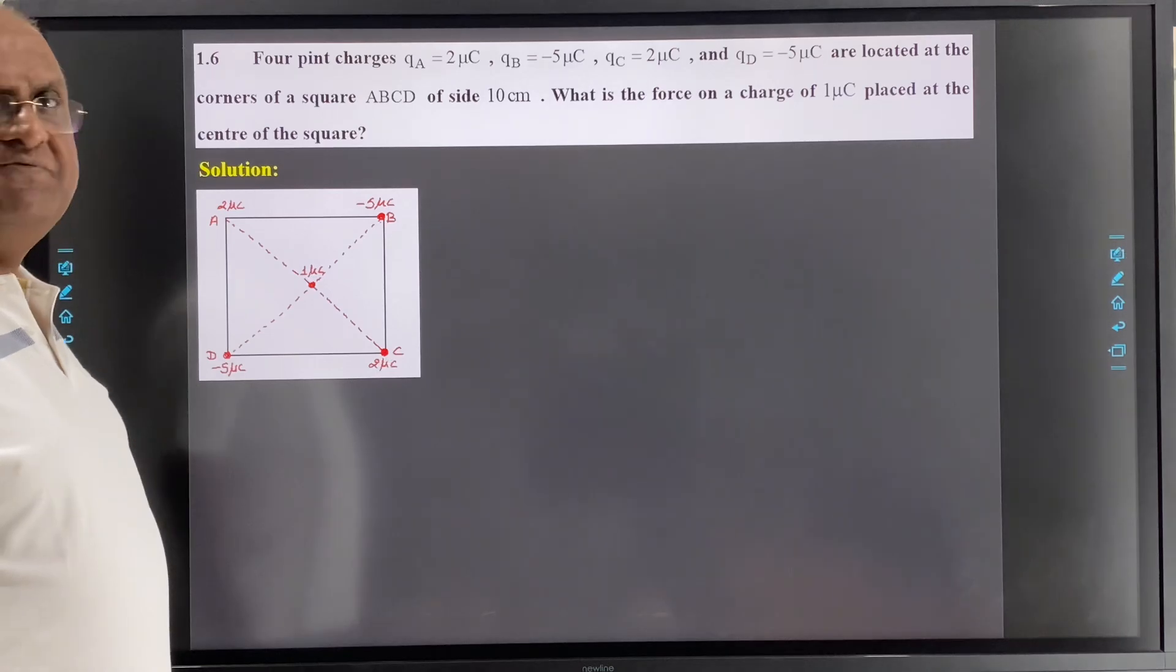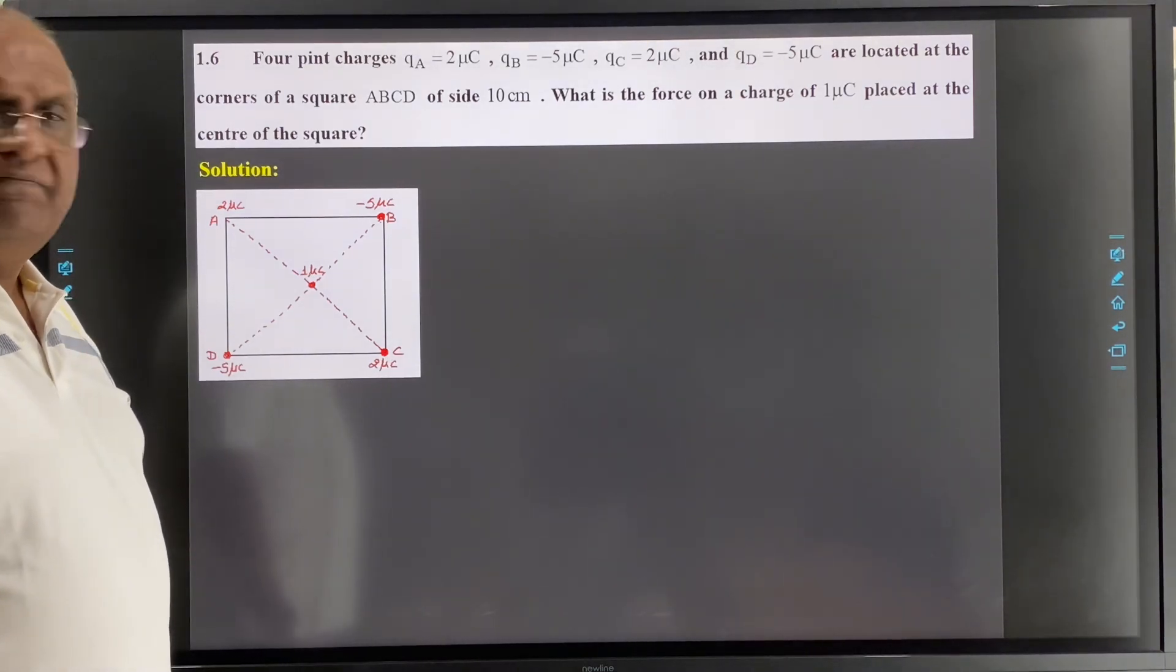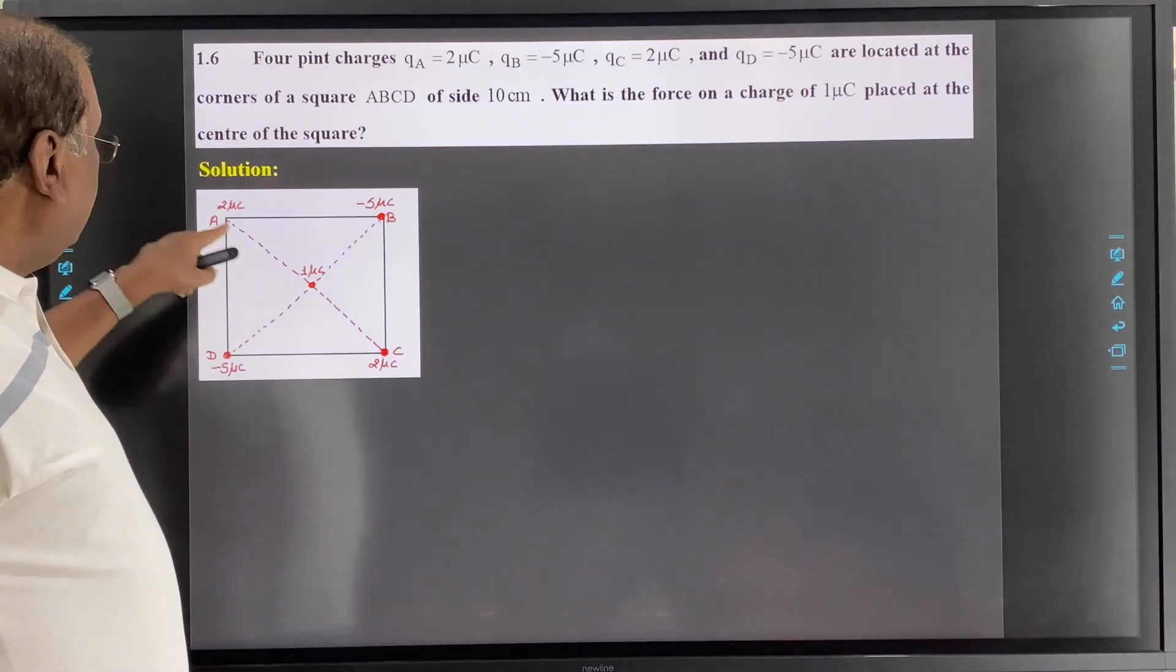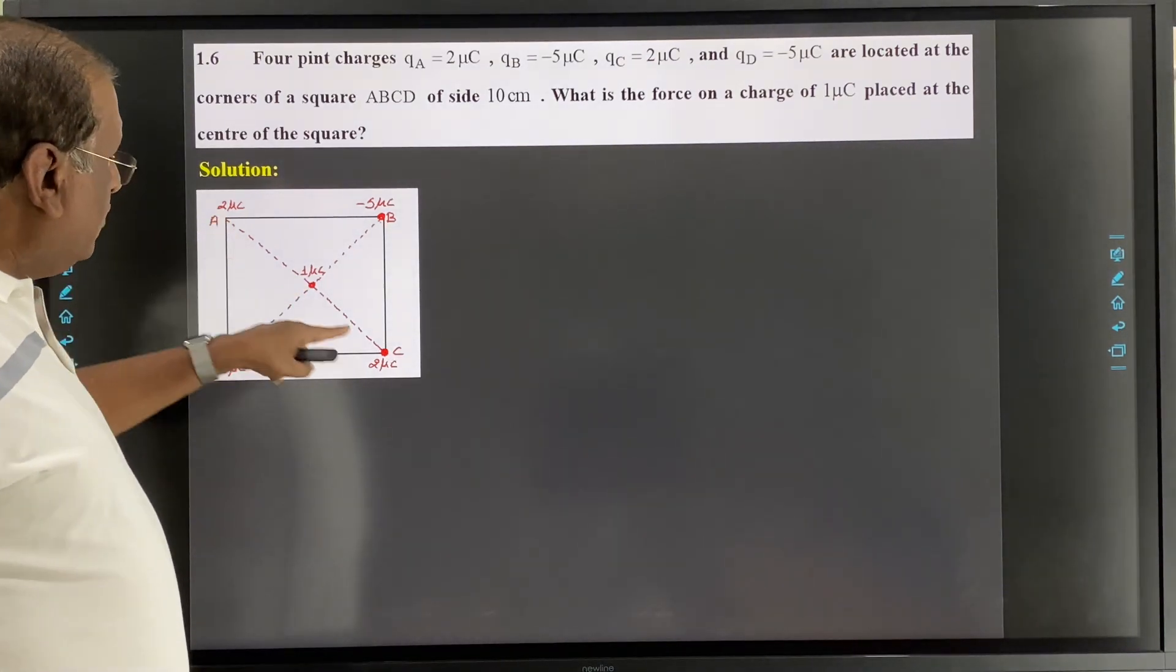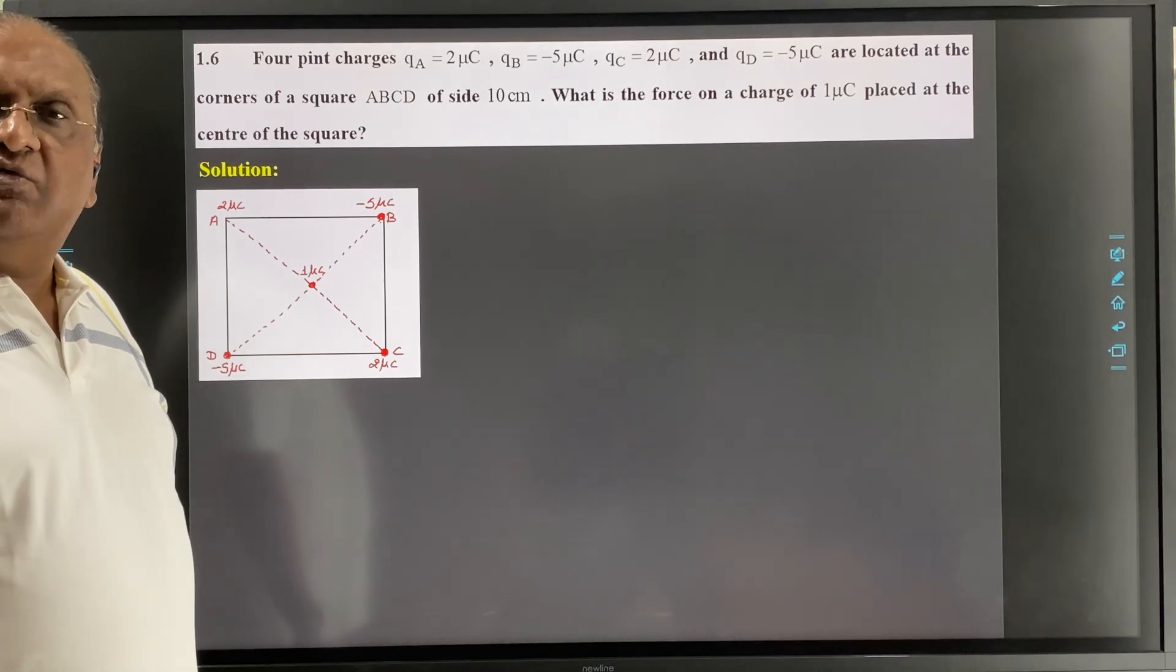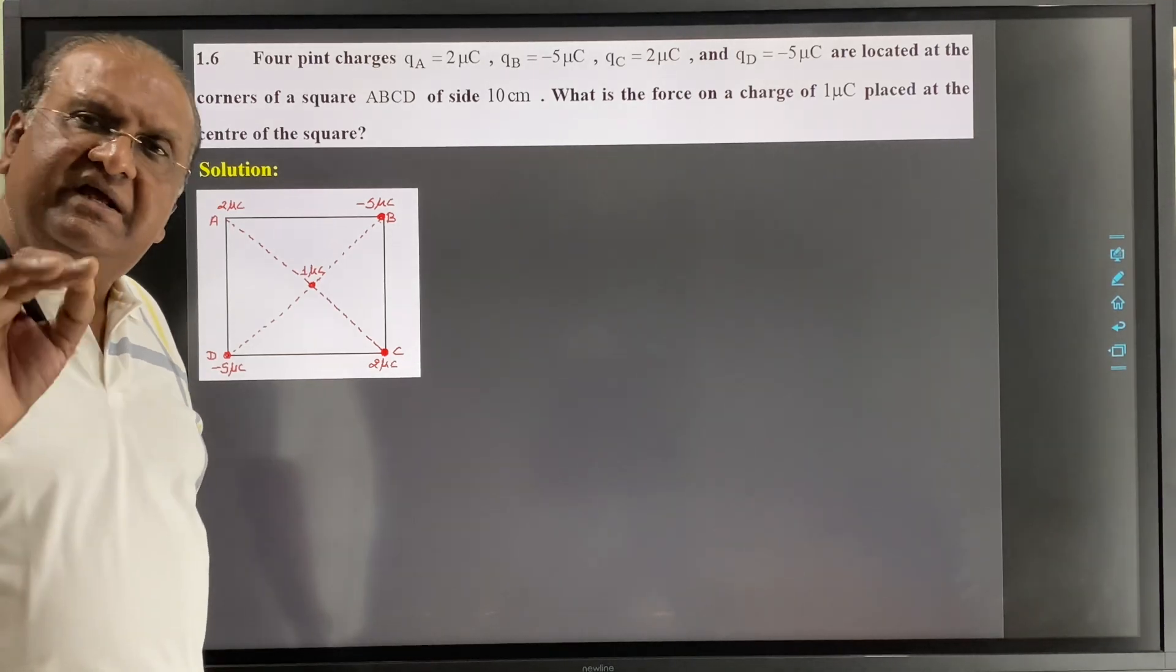and B and D, -5, -5 micro coulomb charge. So A and C, 2 micro coulomb charge will be equal in magnitude opposite in direction.